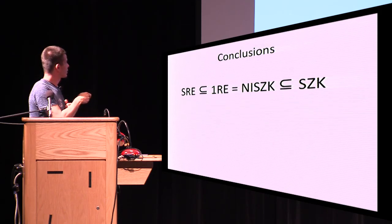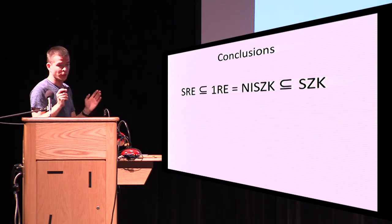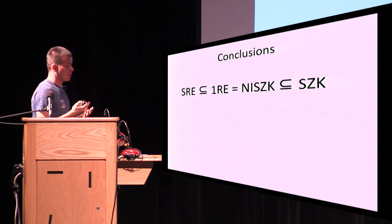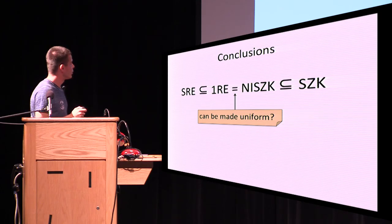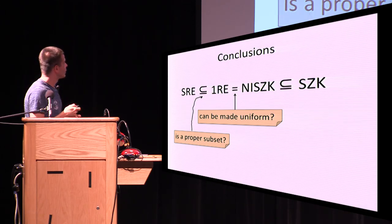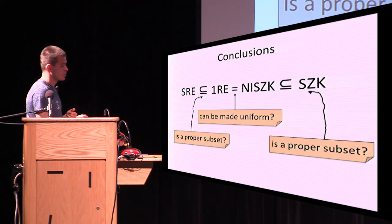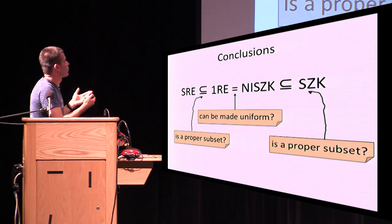In conclusion, we have the task of comparing complexity classes SRE and SZK. Our main result is placing two new complexity classes — 1RE and NISC — between them and showing their equality. Open questions remain: first, our reduction has non-uniform advice and we would like to make it uniform. Second, the SRE versus 1RE question is new and we want to understand if it is a proper subset. Third, the NISC versus SZK question has been studied before and we also want to understand if NISC is a proper subset of SZK. The main goal remains understanding the relation between SRE and SZK.